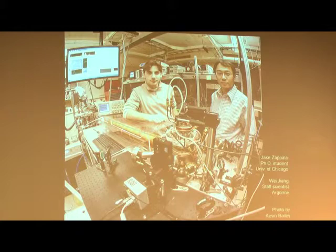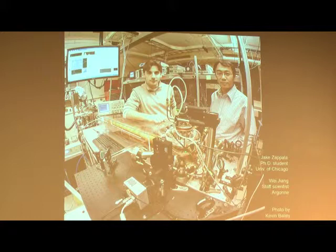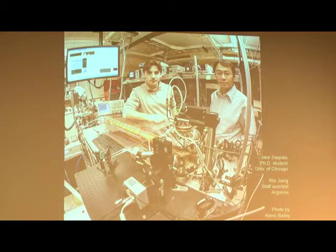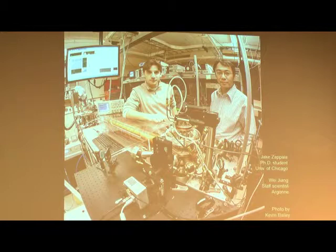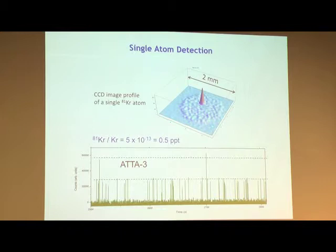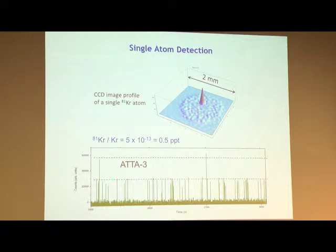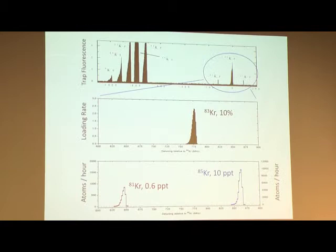This is the trap setup in our laboratory in Building 203 — you're welcome to visit for a tour. Here's the source, here's the trap side, and the fluorescence of the atom in the chamber can be imaged on this camera. We have gone through several generations of the instrument. This is the latest generation and the latest team: Jake Zapala, a PhD student from the University of Chicago, and Wei Jiang, an assistant physicist in the physics division.